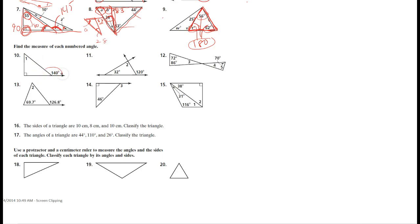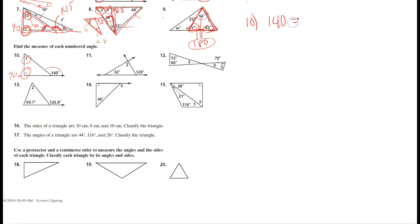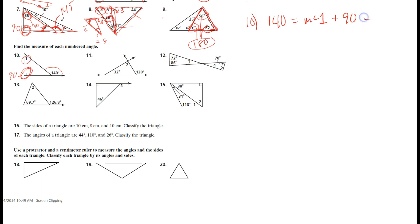Number ten. We have a one hundred and forty degree exterior angle, and the two remote interiors are angle one and a right angle — the square symbol always means ninety. So one hundred and forty equals the measure of angle one plus ninety. Subtracting ninety from both sides gives the measure of angle one equals fifty.